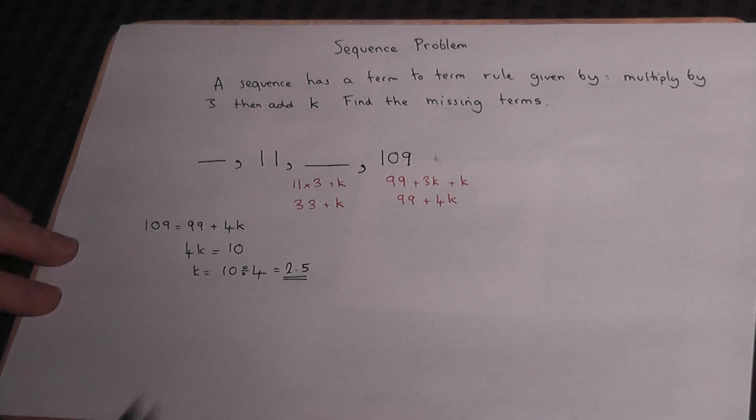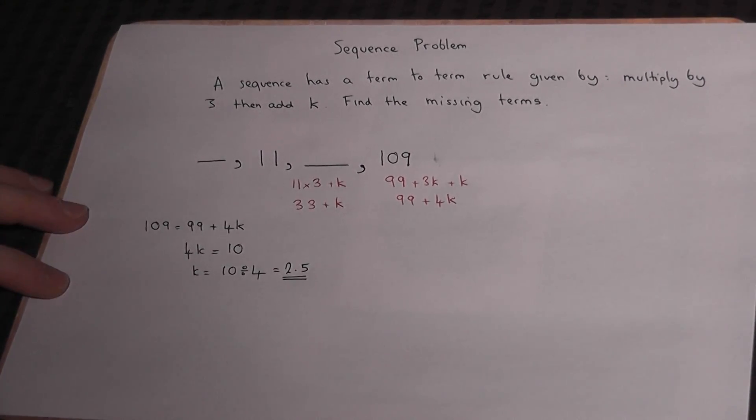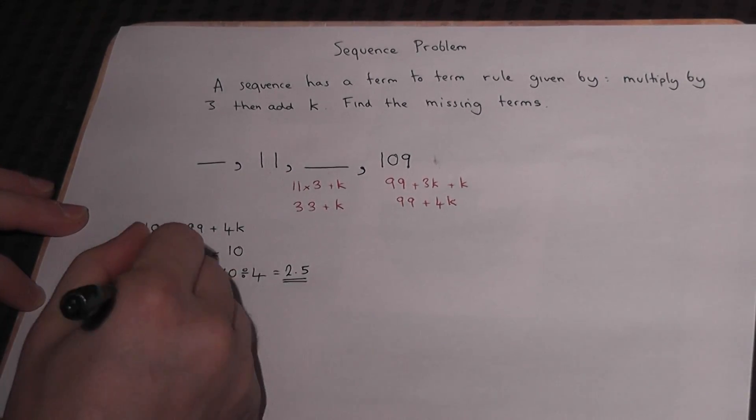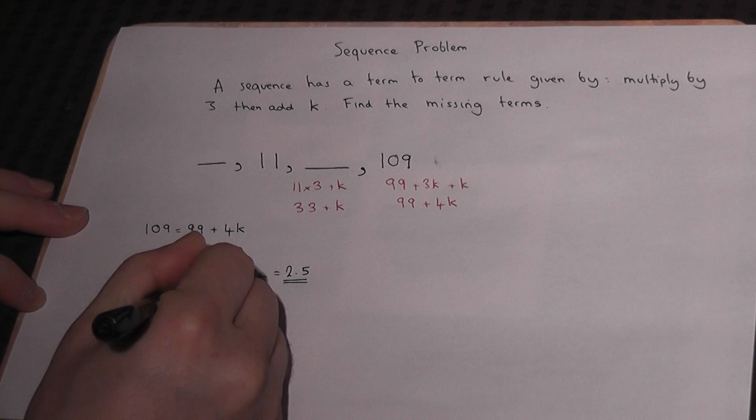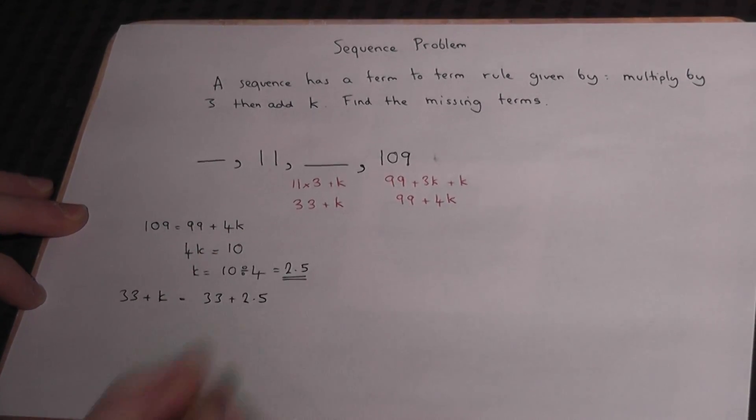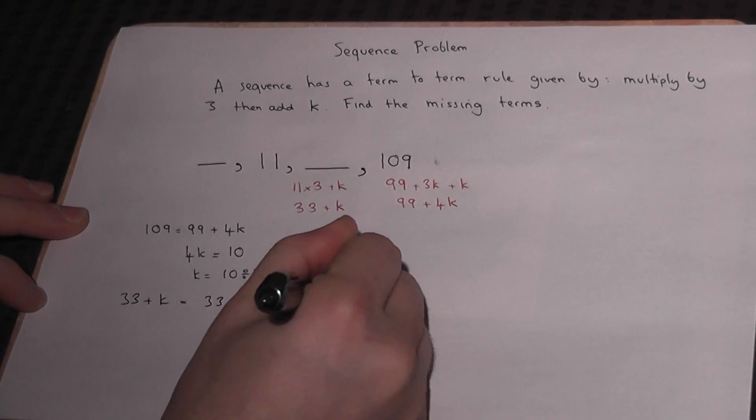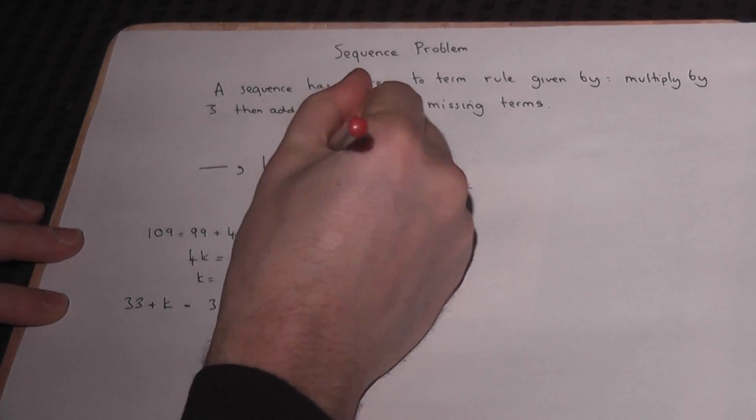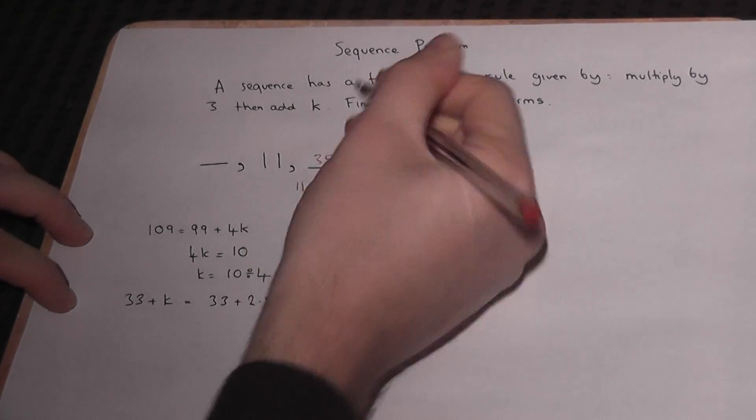We can now find the missing terms in the sequence. So this term here was 33 plus k. So 33 plus k is 33 plus 2.5, which equals 35.5. So this term here is 35.5.